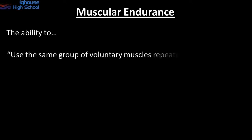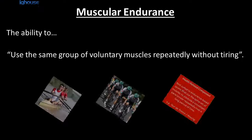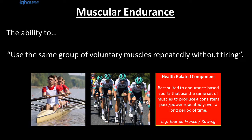Muscular endurance is using the same group of voluntary muscles — biceps, triceps, quadriceps, hamstrings — repeatedly without fatigue. This is best suited to endurance-based sports that use the same set of muscles over and over again. The difference from cardiovascular endurance is that cardiovascular endurance involves the whole body, whereas muscular endurance is a specific set of muscles, such as in cycling where you're using your leg muscles all the time, or rowing where the arms are used regularly.